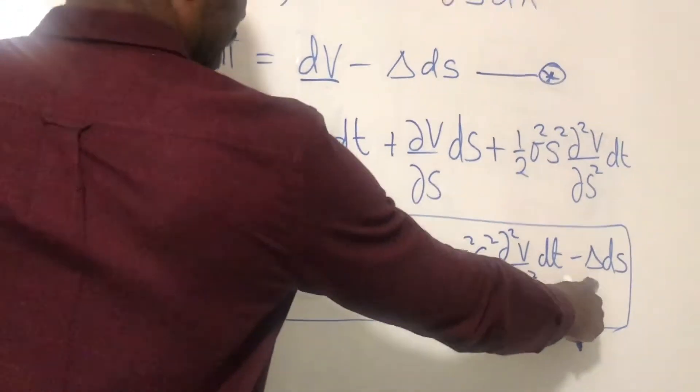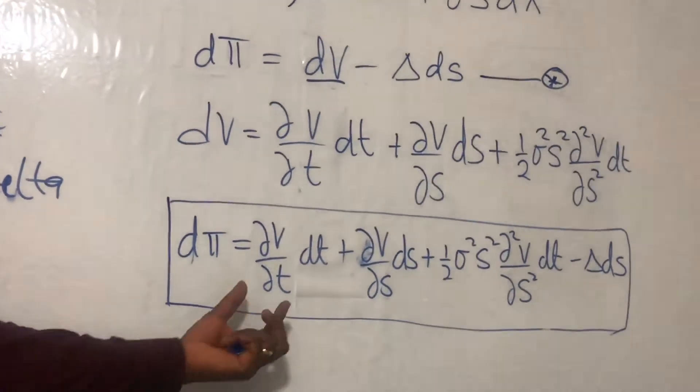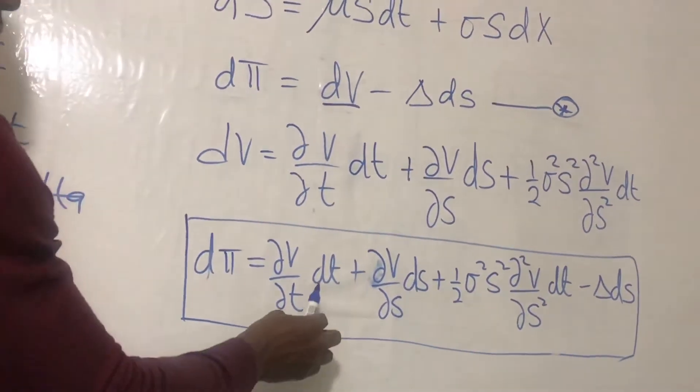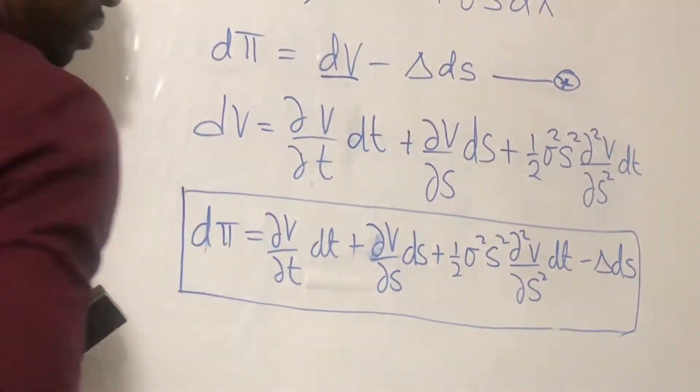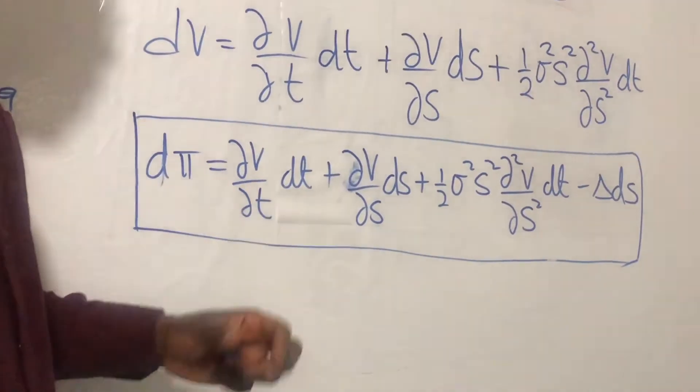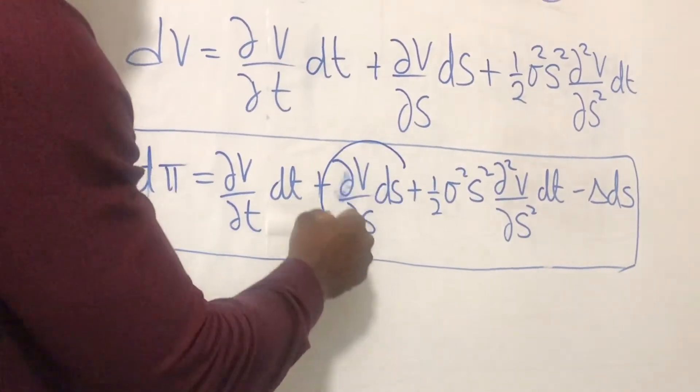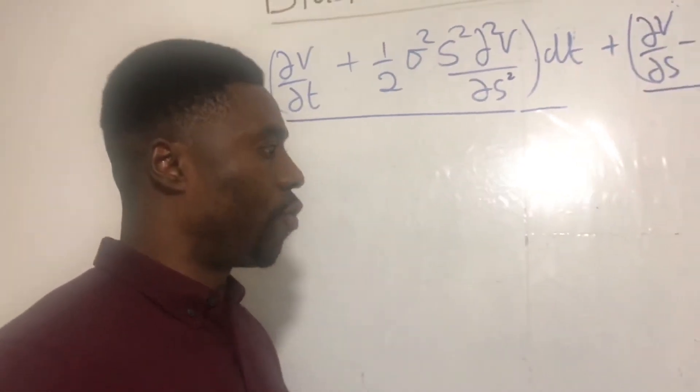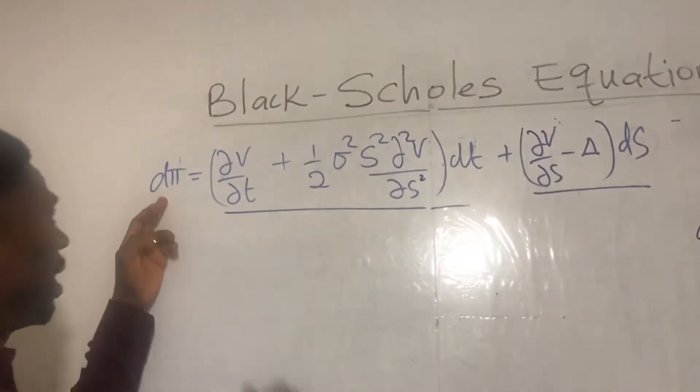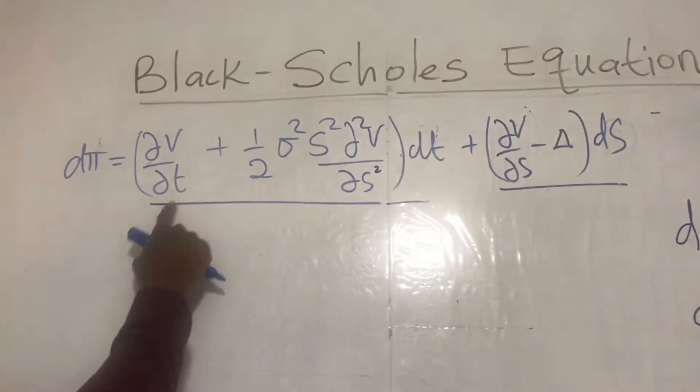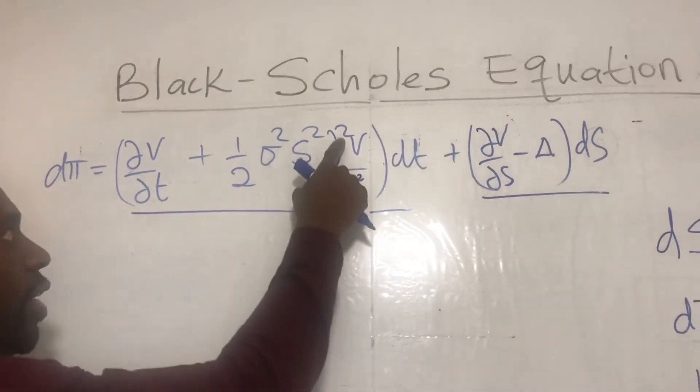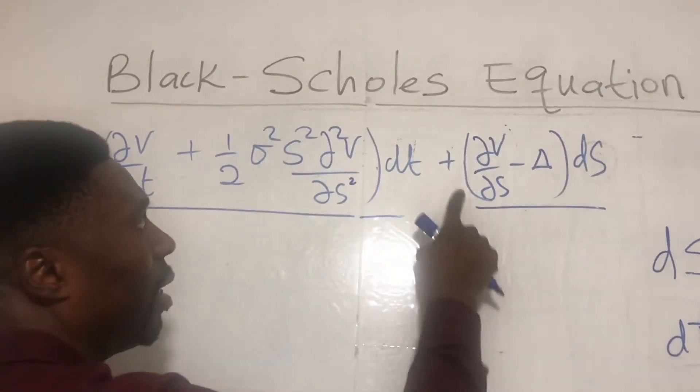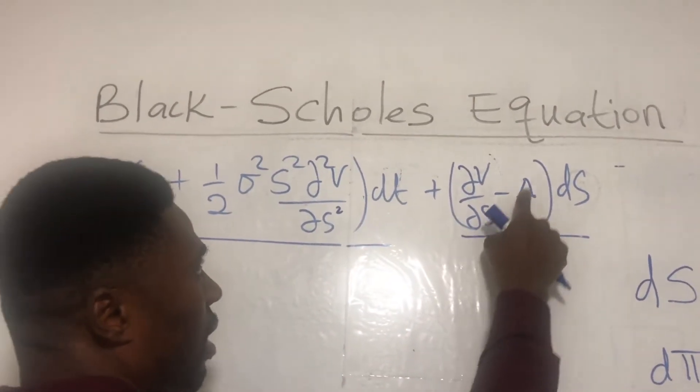Now, this delta is a quantity that we can choose. So we are going to choose delta in this case. If you look at this carefully, dt and dt over there are deterministic. The only randomness we have is coming from here with the dS and over here with the dS. So rearranging gives us dπ equals (∂V/∂t + one half σ² S² ∂²V/∂S²) dt plus (∂V/∂S - delta) dS.